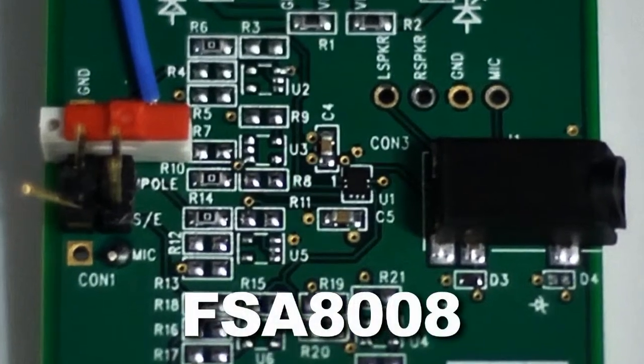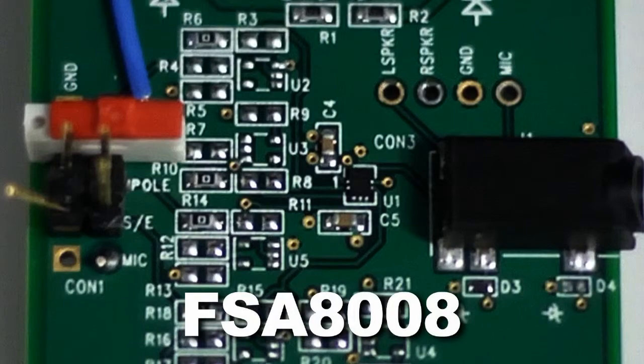The FSA 8008 is an integrated audio jack detection and configuration switch for 3 or 4-pole audio accessories. The FSA 8008 reduces 70% of board space and lowers the bill of material costs.